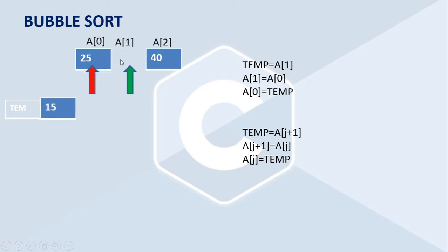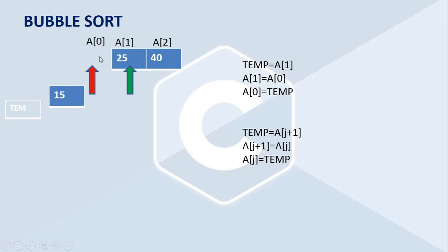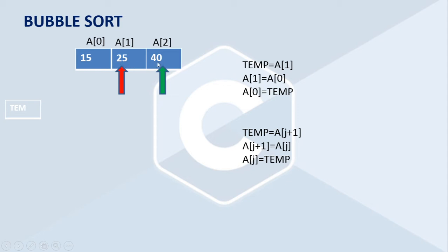If the second one is smaller than the first one, or the first one is greater than the second one, we place this value into a temporary variable, move the other value to this position, and the temporary value is placed back into the 0th index position. Then we increment the pointer to the next location and perform a comparison with those two. But if those two are already in ascending order, we do not want to perform any swapping operation.